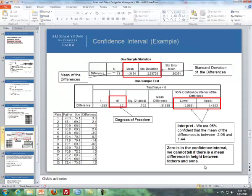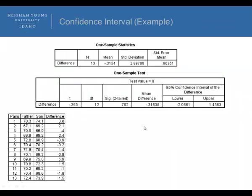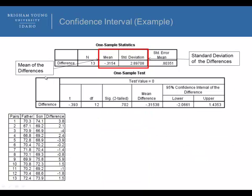So here's an example of SPSS output. First of all, this is the mean of the differences here. When we take the sample of 13, we get the mean of the differences and the standard deviation of the differences. We also get degrees of freedom, which is equal to 12, and then we construct a 95% confidence interval.